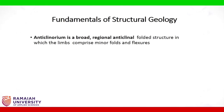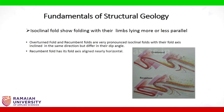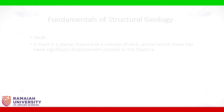Anticlinorium is a broad, regional anticlinal folded structure in which the limbs comprise minor folds and flexures. Isoclinal folds show folding with their limbs lying more or less parallel. Overturned fold and recumbent folds are very pronounced isoclinal folds with their fold axis inclined in the same direction but differing in dip angle. Recumbent fold has its fold axis aligned nearly horizontal.